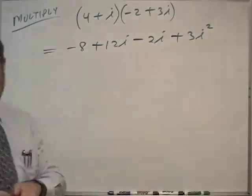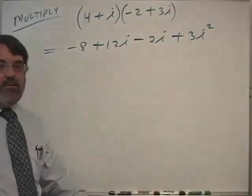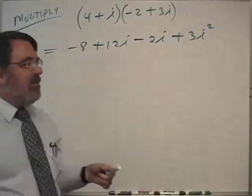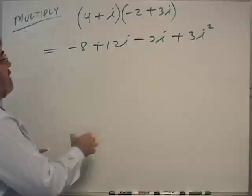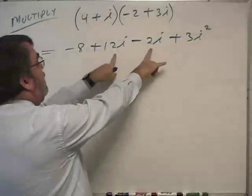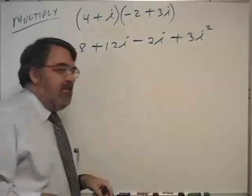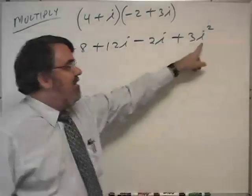Alright, so we multiply those out, and normally of course in algebra you combine like terms at this point. And so these are the two like terms at the moment we can combine. But then there is also the i squared.